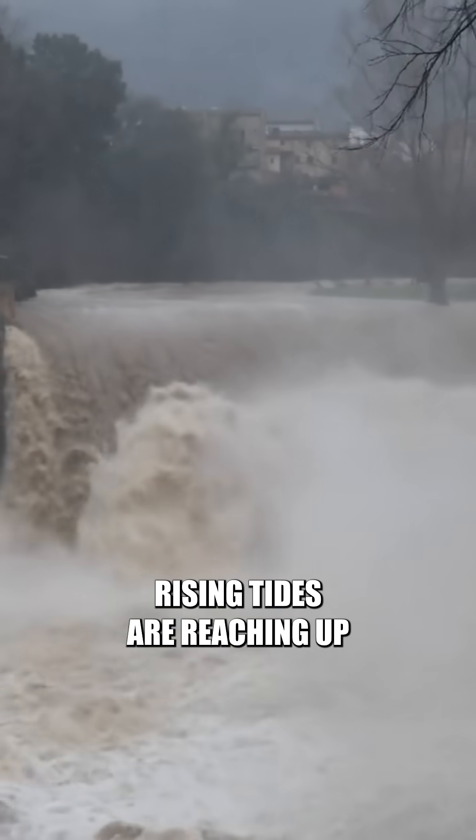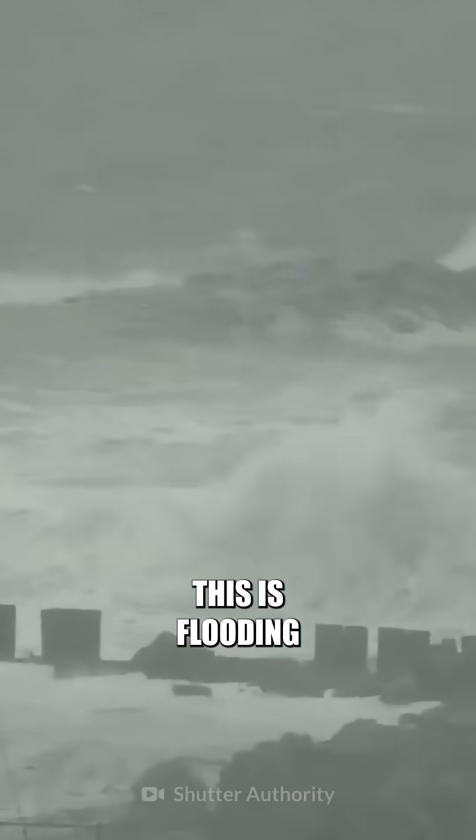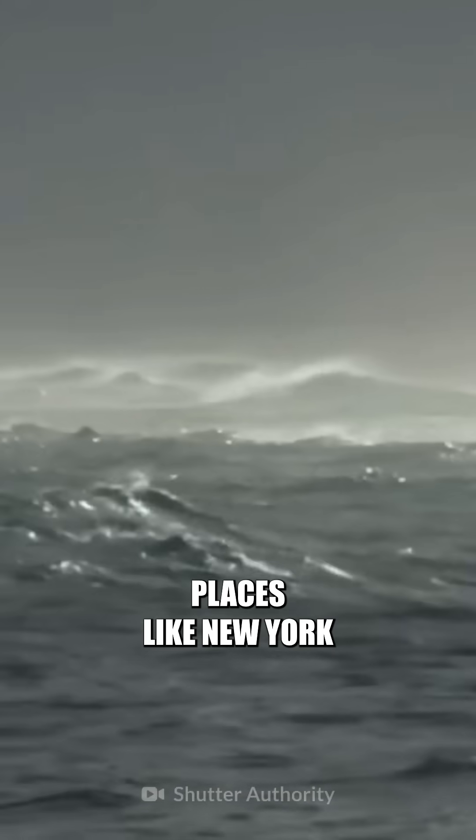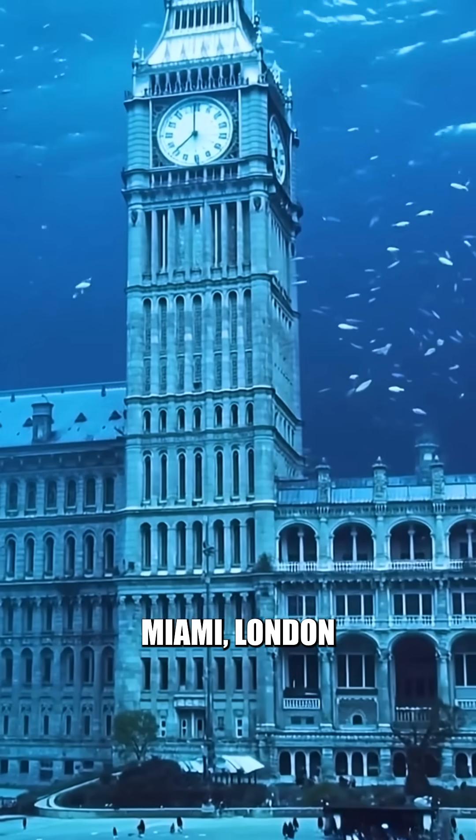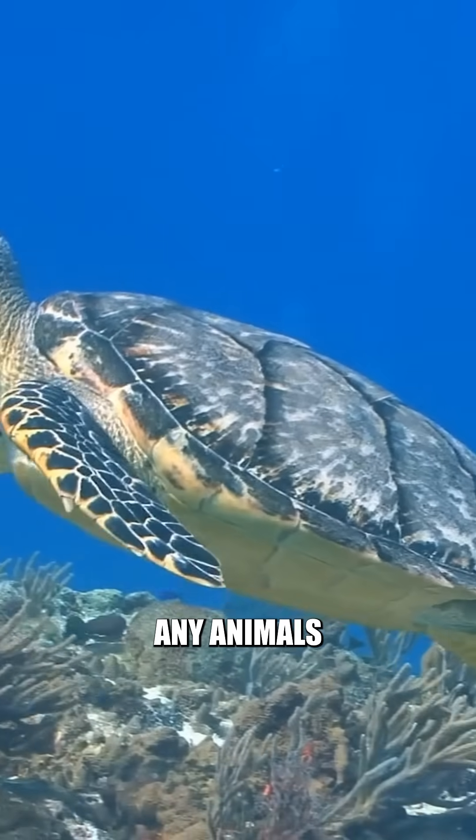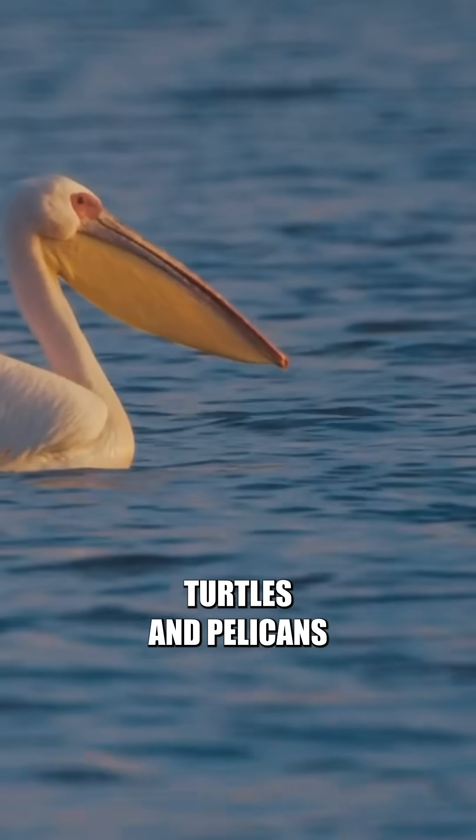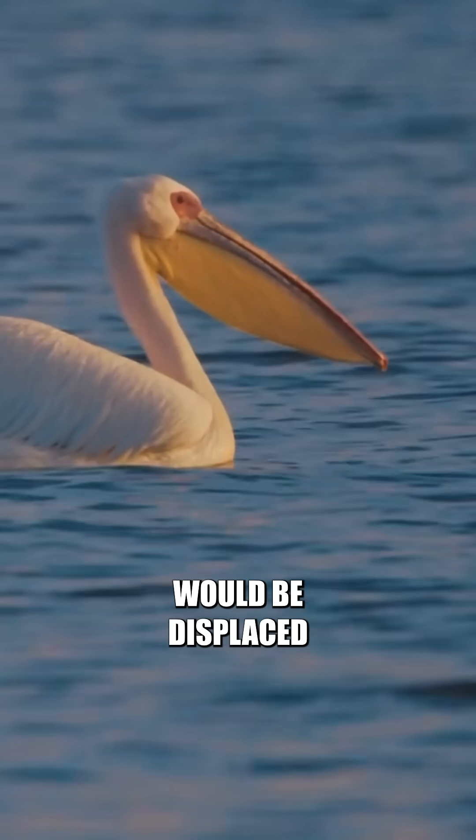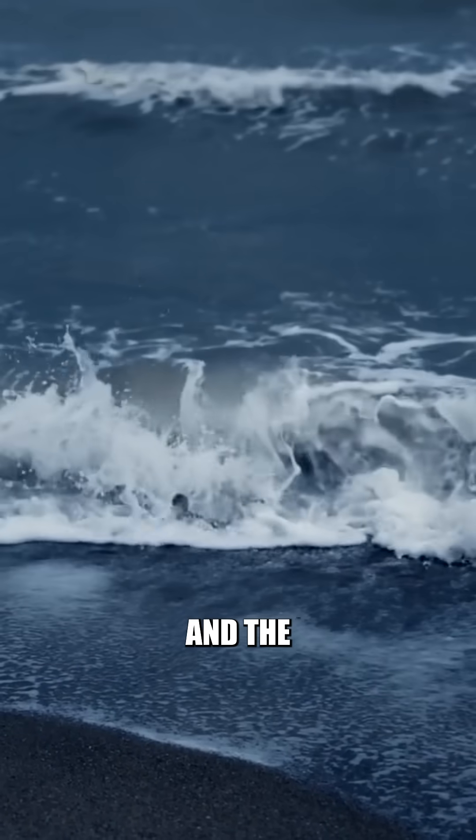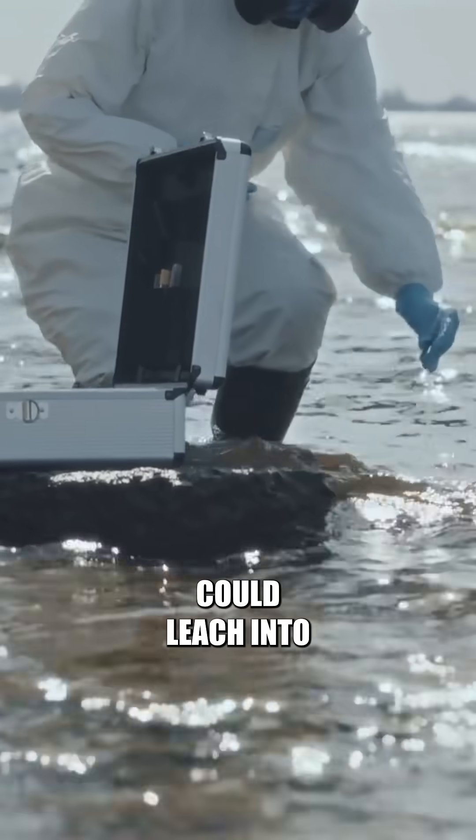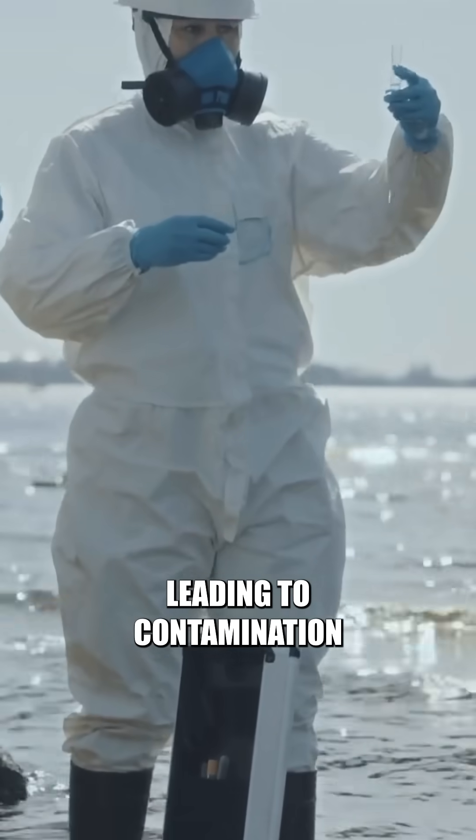Rising tides are reaching up to 5 meters. This is flooding our coastal cities. Places like New York, Miami, London would all be underwater. Any animals that live on the coasts, like sea turtles and pelicans, would be displaced due to the rising water. And the salt water from the ocean could leach into our freshwater supplies, leading to contamination.